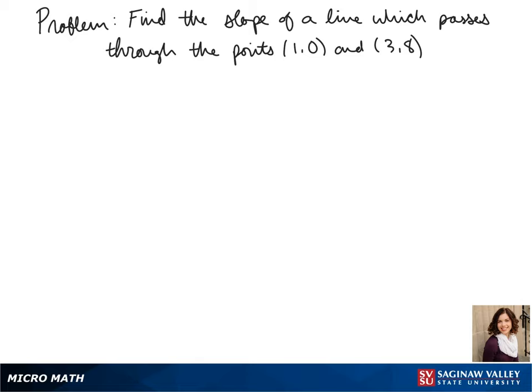Welcome to another day of algebra. Today we'll be finding the slope of a line which passes through the points 1, 0, and 3, 8.